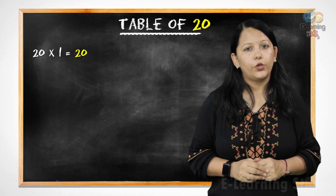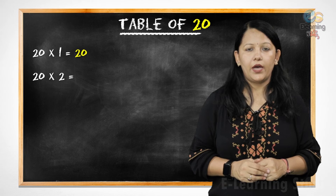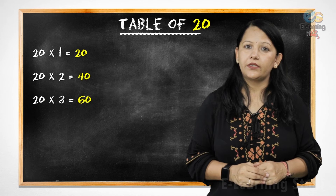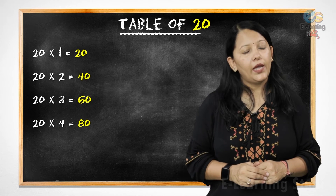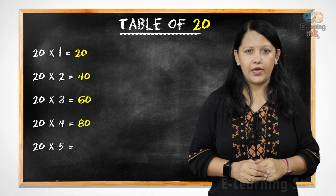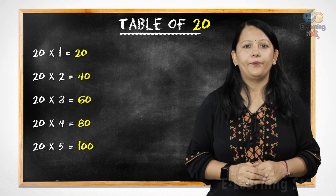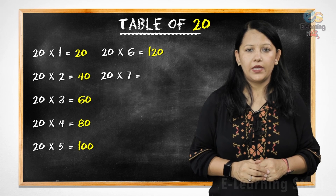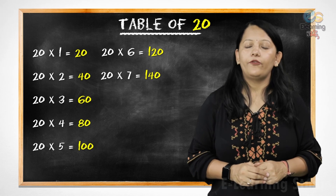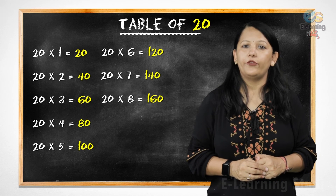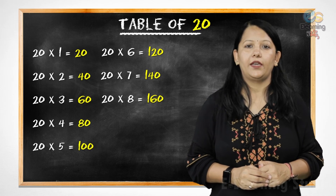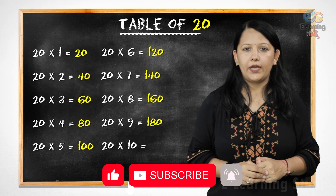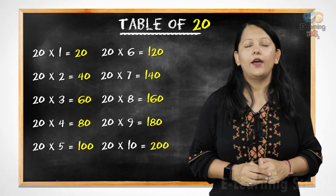Now let's revise it. 2 1's are 20, 2 2's are 40, 2 3's are 60, 2 4's are 80, 2 5's are 100, 2 6's are 120, 2 7's are 140, 2 8's are 160, 2 9's are 180, 20 10's are 200. Very good.